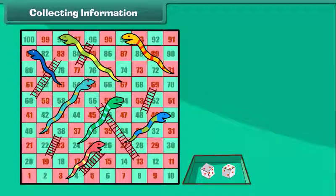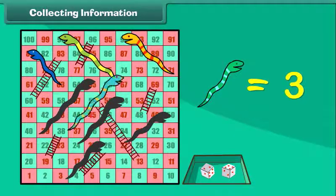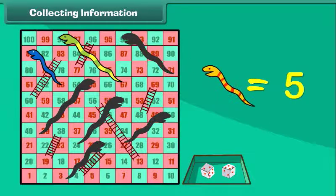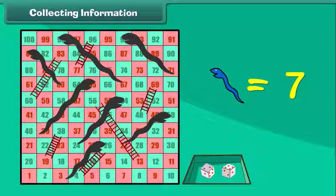First, let us count and write the total number of snakes. 1, 2, 3, 4, 5, 6, and 7. There are 7 snakes.